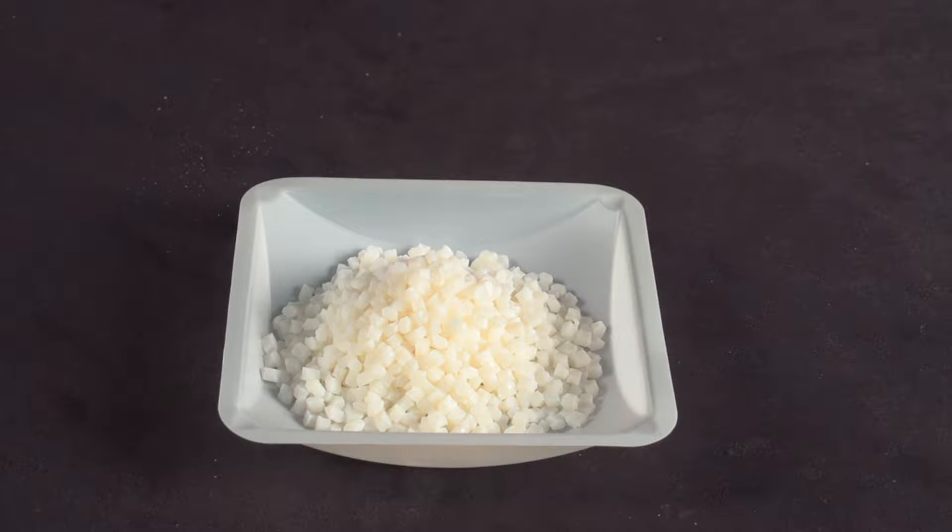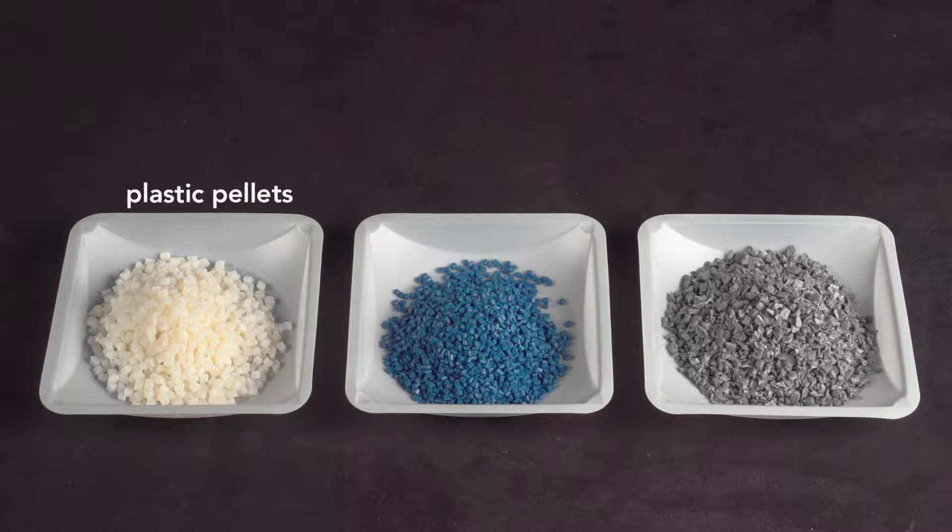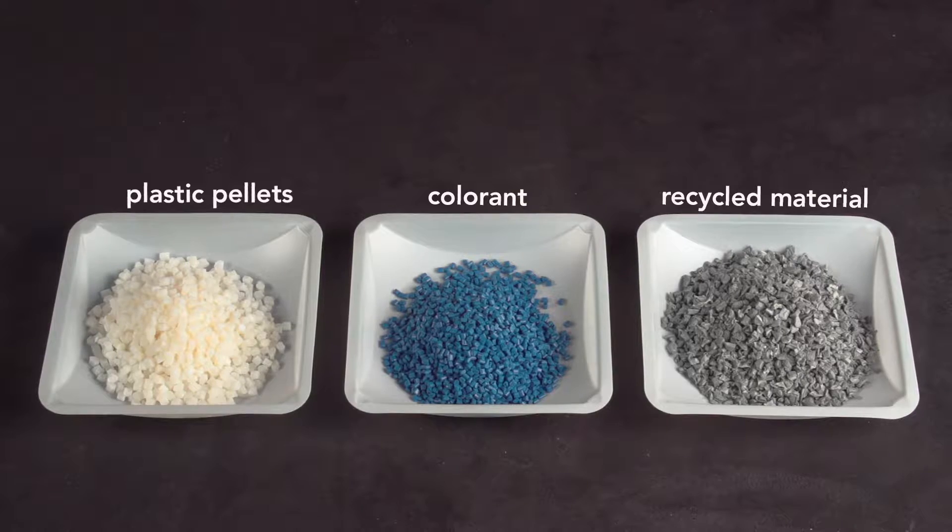All injection molded objects start with these plastic pellets, which are a few millimeters in diameter. They can be mixed with small amounts of pigment, called colorant, or with up to 15% recycled material then fed into the injection molding machine.